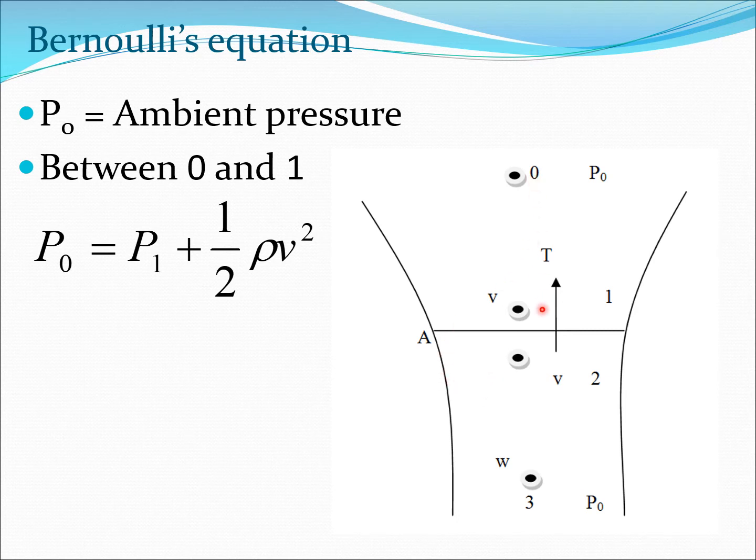Between 0 and 1, we can write the Bernoulli's equation as p0 = p1 + 1/2 ρv². Remember, velocity at 0 is 0, so there is no velocity here. We only have p0 here, and here we have p1 and then half ρv².